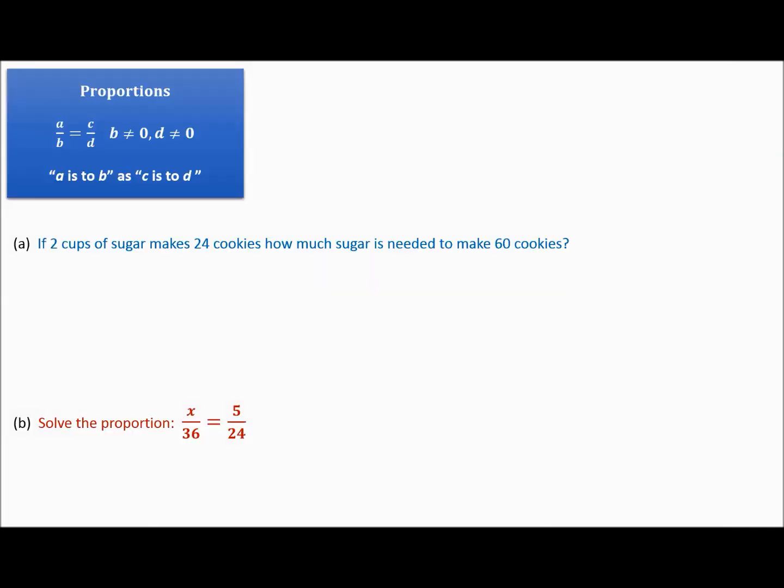Hello everyone. In this section, I would like to talk about solving proportions. First, we want to define what a proportion is. If you'll notice in the blue box, it says the fraction a over b is equal to c over d. There's a couple things that have to be true if this is the case. b cannot be equal to 0, nor can d be equal to 0. The way you can read this is a is to b as c is to d. So a and b are related in a certain way, and c and d are related in the same way.